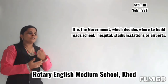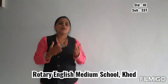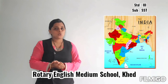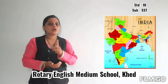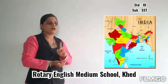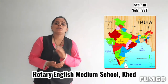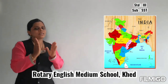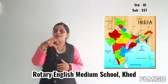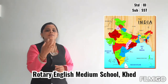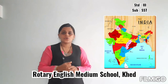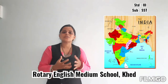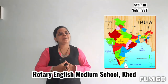India is a very big country, so it is very difficult for one government to look after such a big country. Hence, it was decided to divide it into smaller units called states. There are 29 states in India.